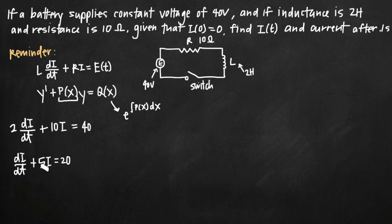p(x) in our case is just the 5 here. It's the coefficient on this i variable. The only thing we need to be careful of here is that normally our integrating factor is written in terms of x. Our variable here is t, so we need to actually write the integrating factor as e to the integral of p(t) dt.